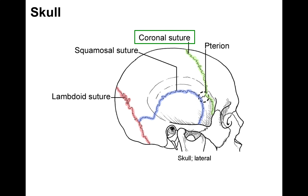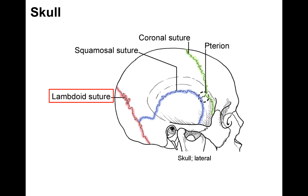The coronal suture runs from one side to the other in the coronal plane, articulating the frontal and parietal bones. The squamosal suture articulates the parietal and temporal bones — squamous means flat. The lambdoid suture articulates the occipital bone to the parietal and temporal bones, making a triangular lambda shape. The pterion is a small suture connecting the coronal and squamosal sutures; it's clinically significant because the middle meningeal artery courses right on its deep surface over a very thin area of bone.